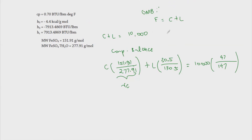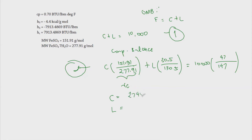We have two equations and two unknowns, so we can determine C and L. Solving the system: the crystals C equals 2,748.8526 pound mass, and the liquor L equals 7,251.1474 pound mass.